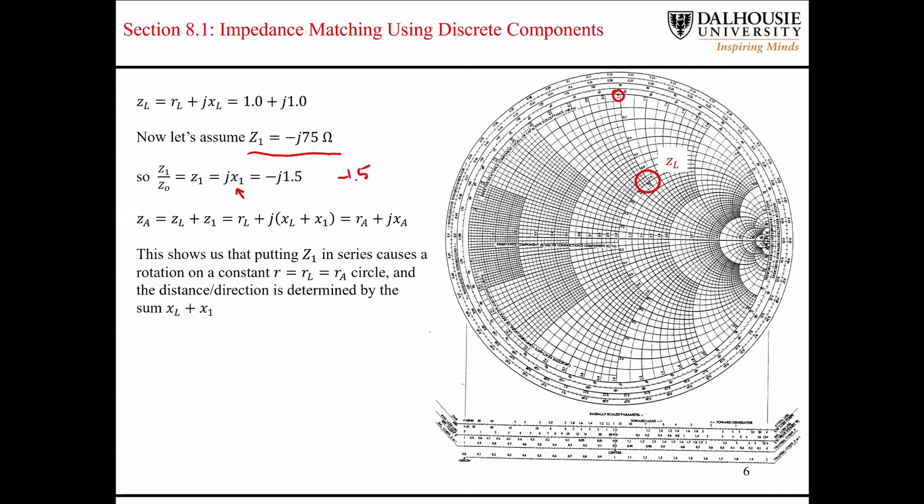So since this is a capacitor, and since it's in series, we know that it's going to cause a rotation along the constant resistance circle in the downward direction.